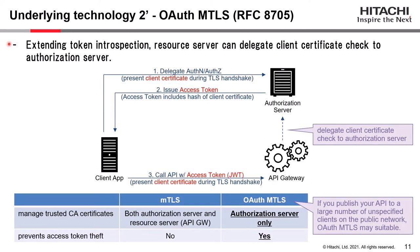Furthermore, by extending token introspection, the API gateway can delegate client certificate checks to the authorization server. The comparison table shows: with standard mTLS, both the authorization server and resource server need to manage trusted CA certificates, whereas with OAuth mTLS, only the authorization server needs to manage them. With standard mTLS, we cannot prevent access token theft, but with OAuth mTLS we can. So if you publish APIs to a large number of unspecified clients on the public network, OAuth mTLS may be more suitable. In this session, I treat these technologies as the underlying technology behind the Zero Trust network.